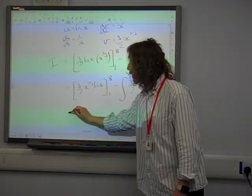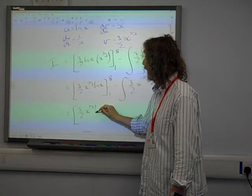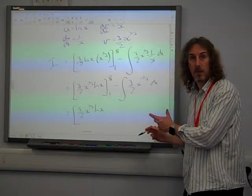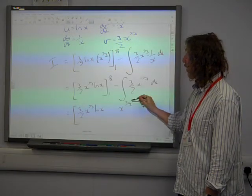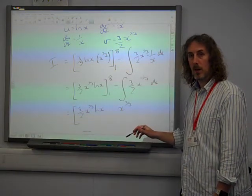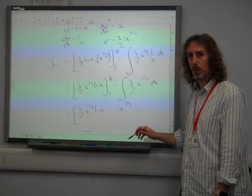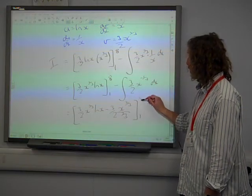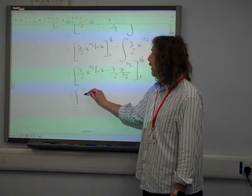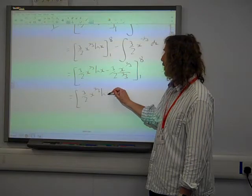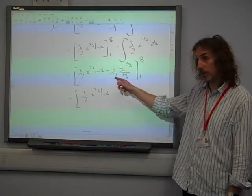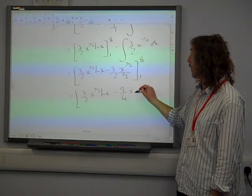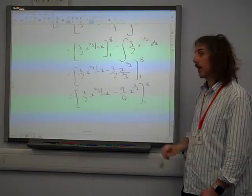Now we can integrate, 3 over 2 x to the two thirds ln(x). Now what's this going to give us then? We're going to integrate this by adding one to the power and dividing by the new power. So we're dividing by the new power, that looks a bit horrible, but we'll work it out in a second. 3 over 2 x to the two thirds ln(x). And this is 3 over 2 divided by two thirds, so that's times 3 over 2, which gives us 9 over 4 x to the two thirds, between 1 and 8.